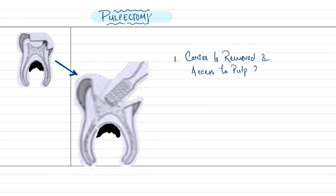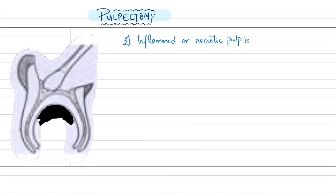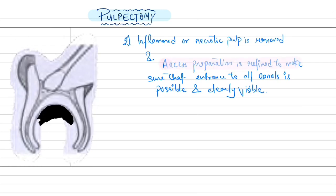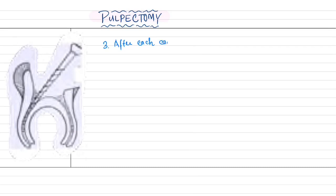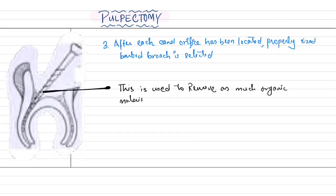The pulpectomy procedure steps: first, caries is removed and access to the pulp chamber is gained. Second, the inflamed or necrotic pulp is removed and access preparation is refined to ensure entrance to all canals is possible and clearly visible. Third, after each canal orifice is located, a properly sized barbed broach is used to remove pulp tissue and as much organic material as possible from each canal.